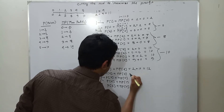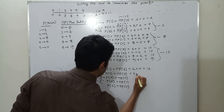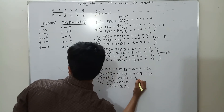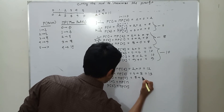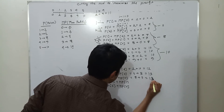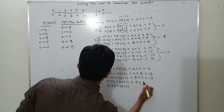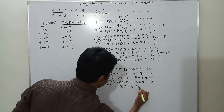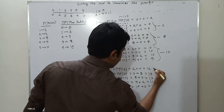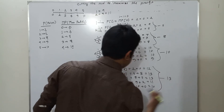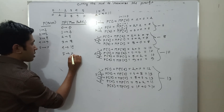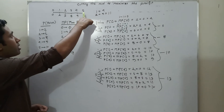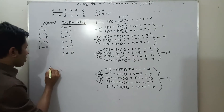For size 1: price of 1 (2) plus max profit of remaining size 4 (10) equals 12. For size 2: price of 2 (5) plus max profit of remaining size 3 (8) equals 13. For size 3: price of 3 (8) plus max profit of remaining size 2 (5) equals 13. For size 4: price of 4 (9) plus max profit of remaining size 1 (2) equals 11. For size 5: price of 5 (10) plus 0 equals 10. The maximum profit for 5-length rod is 13.